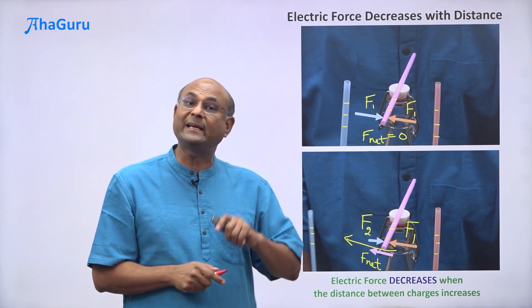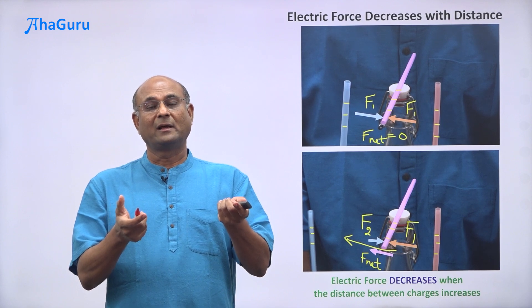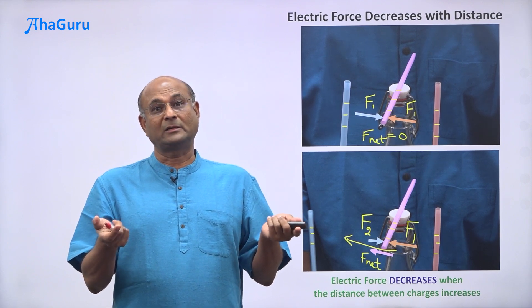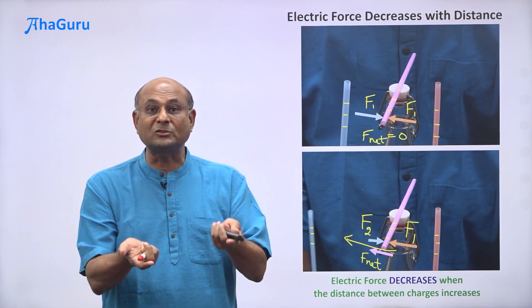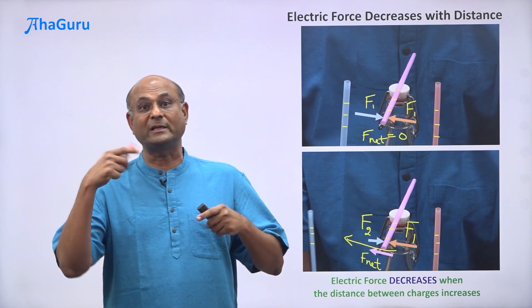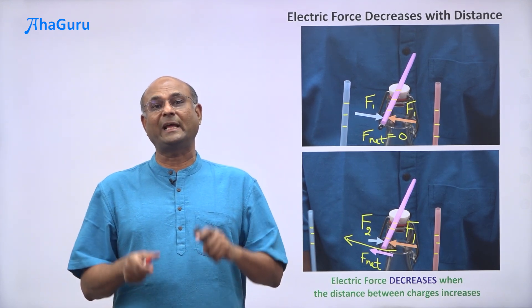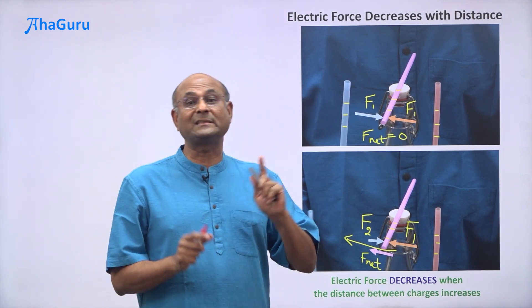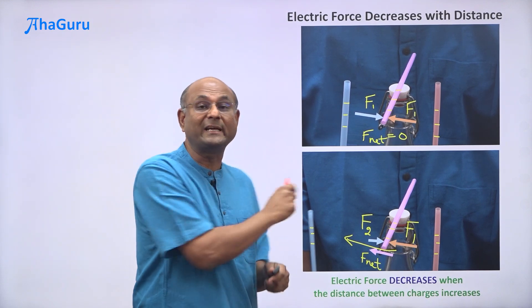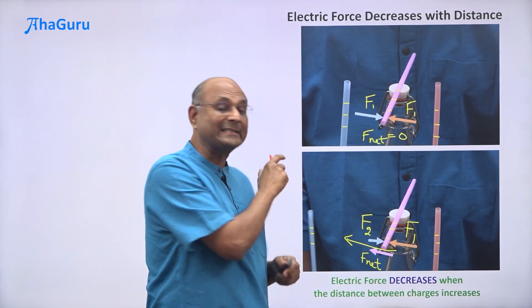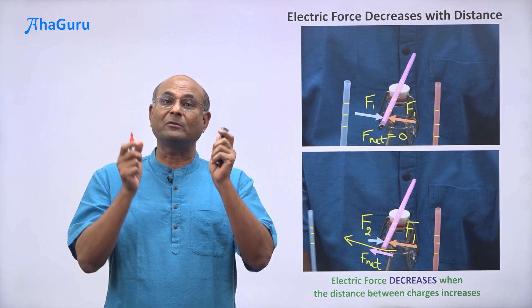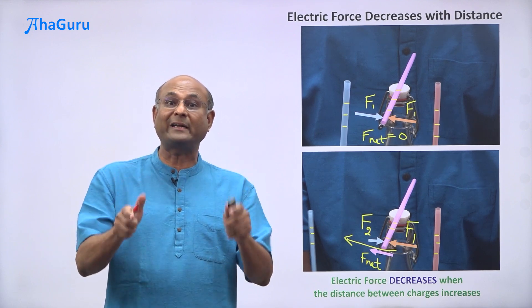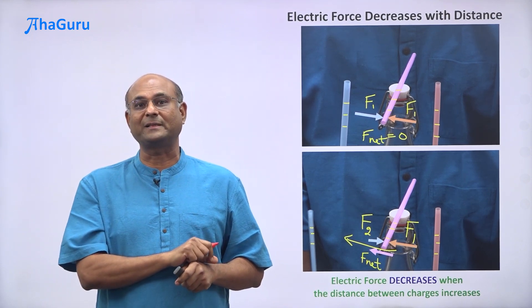But how exactly does it decrease? Is it true that electric force is inversely proportional to the distance? Well, that is not the only option — it can be inversely proportional to the distance squared, or the distance cubed. There are many different ways in which the electric force can decrease with distance, and this simple experiment does not tell us which way. Coulomb did the exact same experiment with a little more sophistication, where he was able to measure the force at various distances, and so he found quantitatively how the force decreases with distance.